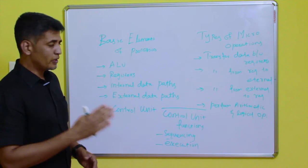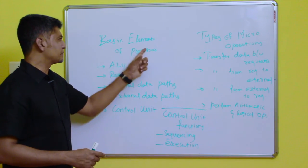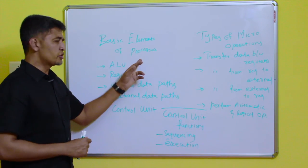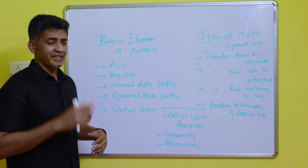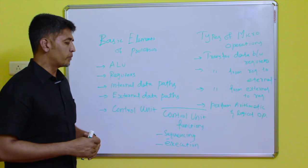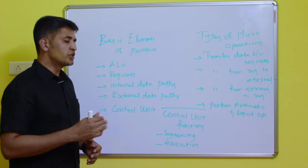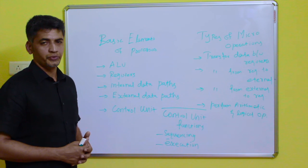In this video we have discussed three things: the basic elements of a processor, the types of micro operations, and control unit functions. Thank you.